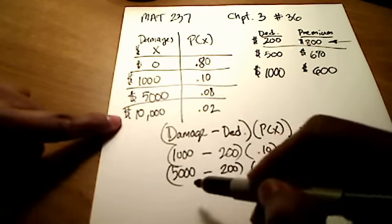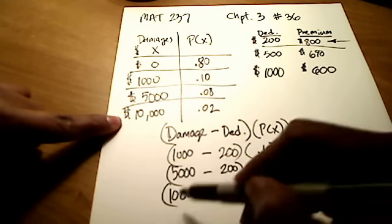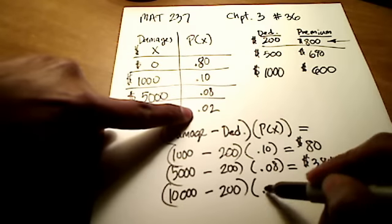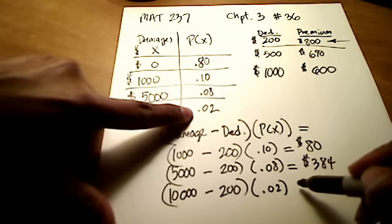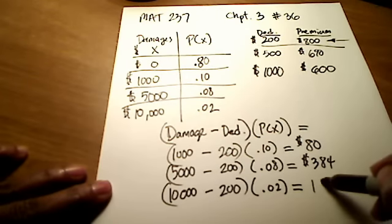And let's look at the last case. What if we had a $10,000 accident? $10,000 accident minus our deductible of 200, and the probability of that occurring was 0.02, or 2%. Let's see, that comes out to be $196.